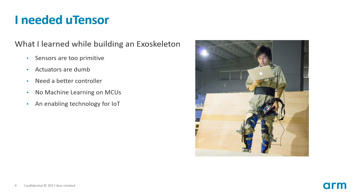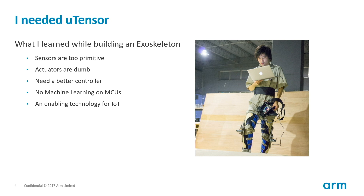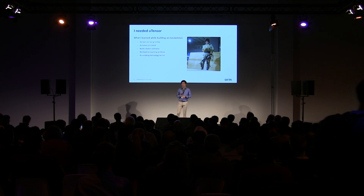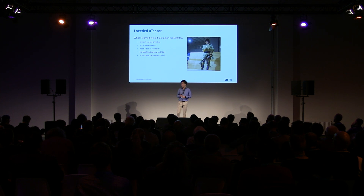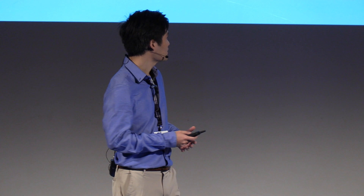What did I realize? Sensors are way too primitive to do this sort of event detection. Actuators are pretty dumb — you probably have several motors and stepper motors that are really hard to control. And the controller: I did this with a bunch of if-else statements. It kind of works — you can feel it assist you as you walk up and down stairs — but we figured there must be a better way. So I started looking into whether there's a way to deploy machine learning on microcontrollers, because we want this to be affordable, but at the time, about three years ago, there was nothing that allowed us to do that.